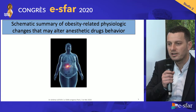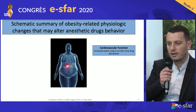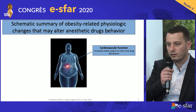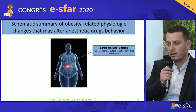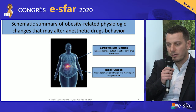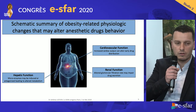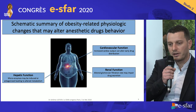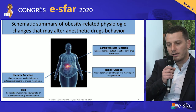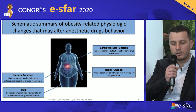Here is a schematic summary of obesity-related physiologic changes that may alter anesthetic drug behavior. For cardiovascular function, there is an increase in cardiac output that can alter early drug distribution. For renal function, there is an altered glomerular filtration rate that may impair drug clearance. For hepatic function, there is an alteration of microenzyme cytochrome P450 that may be induced or antagonized, leading to altered metabolism. And in the skin, there is also a reduced perfusion that may slow uptake of subcutaneous drug administration.